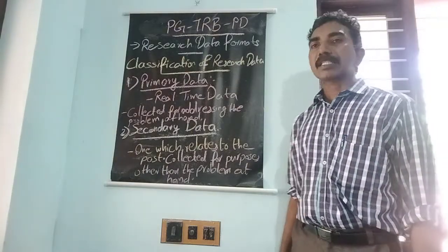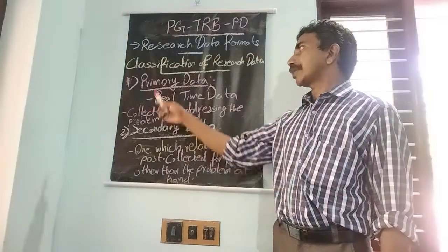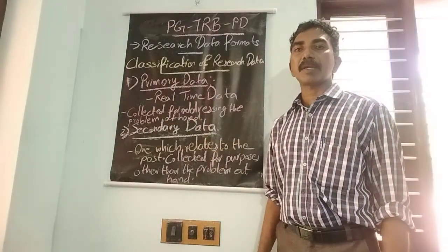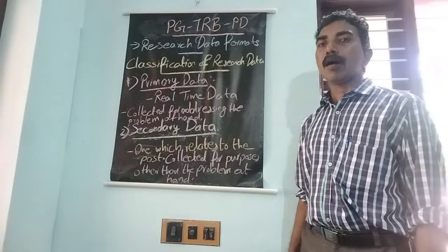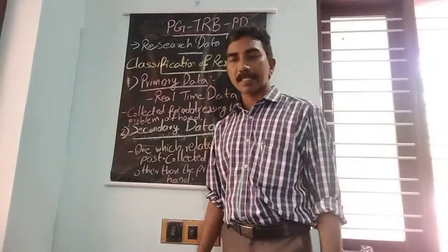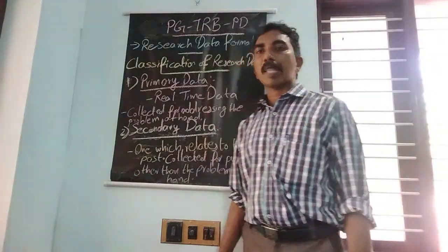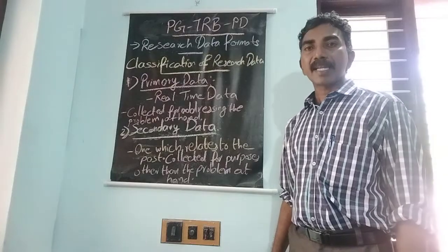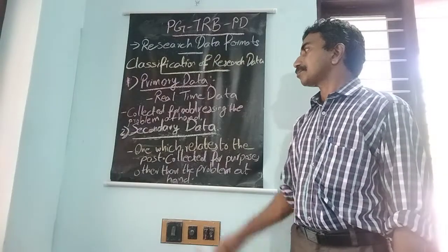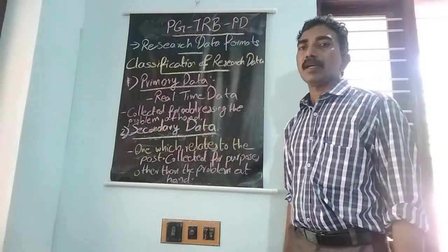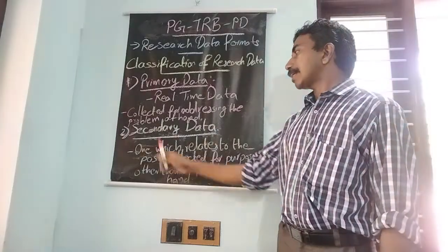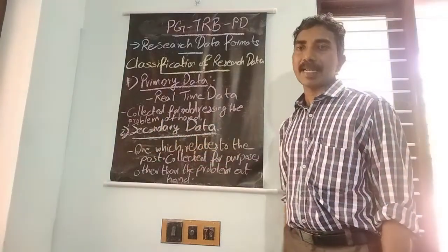Next, we will study classification of research data. Research data can be classified into two types. They are primary data and secondary data. What is primary data? Primary data is real-time data, collected for addressing the problem at hand.